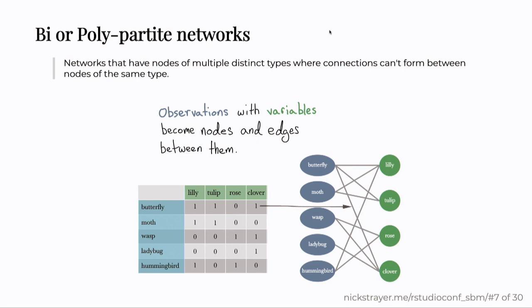So bipartite networks or polypartite networks are networks that have nodes of multiple distinct types, where connections can't form between nodes of the same type. In this example, we have various pollinators and various flowers. You can draw an edge between a pollinator and a flower based on if that pollinator pollinates that flower. So butterflies pollinate lilies and clovers. But you can never have a connection from butterfly to moth.